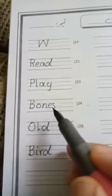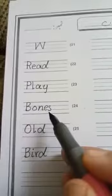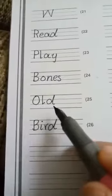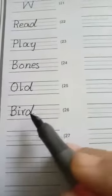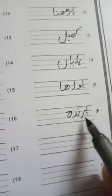Next word is bones, bones mean haddiyaan. Next word is old, old mean boodha. Next word is bird, bird mean parinda.